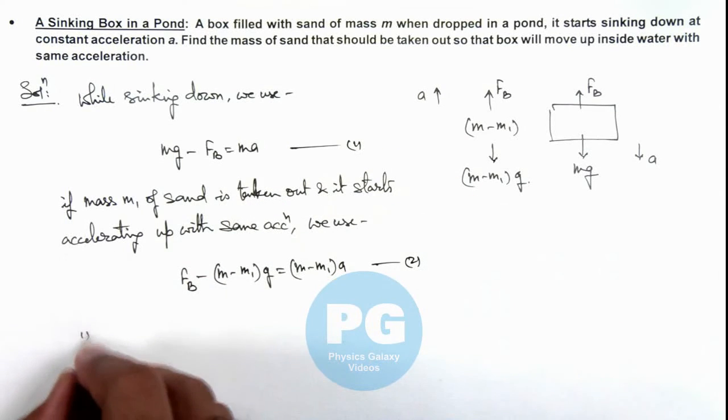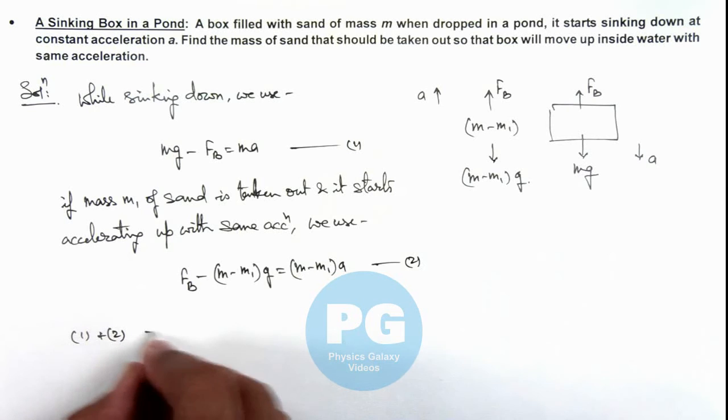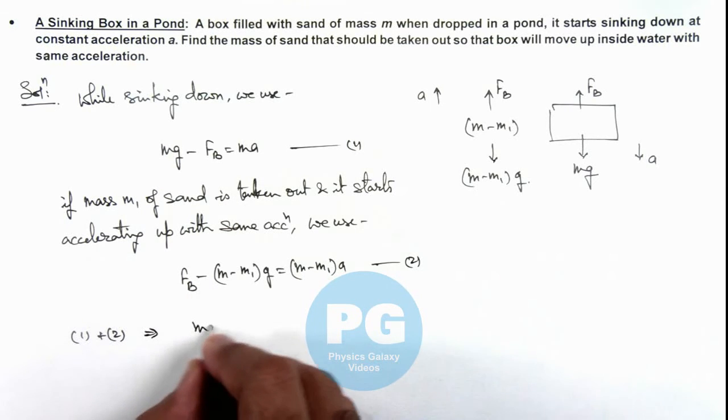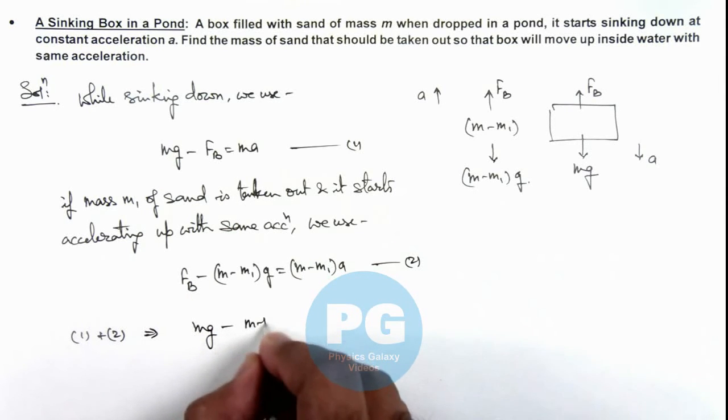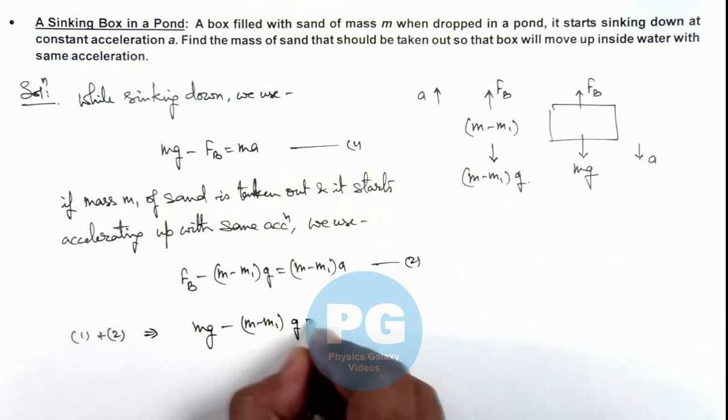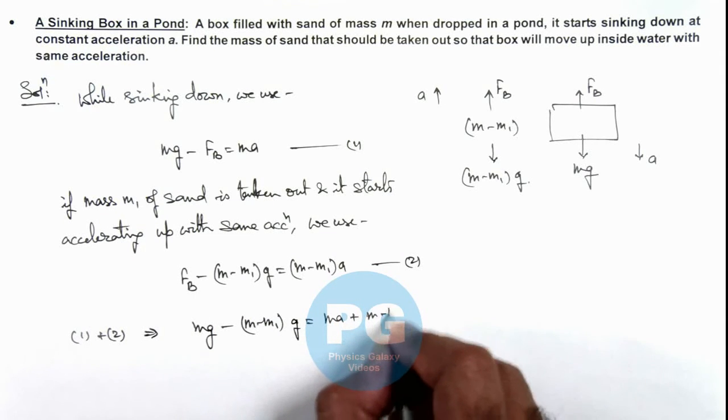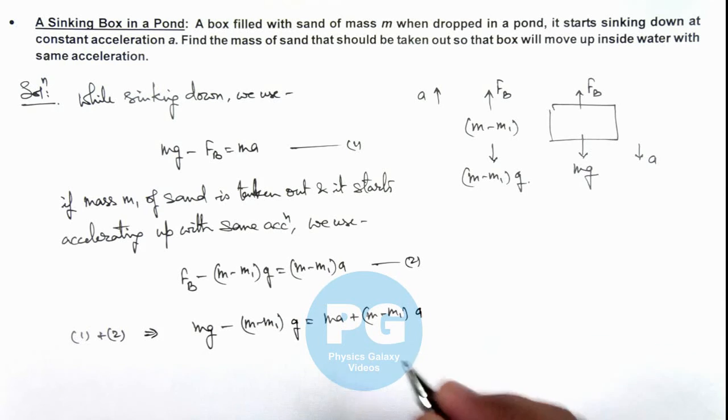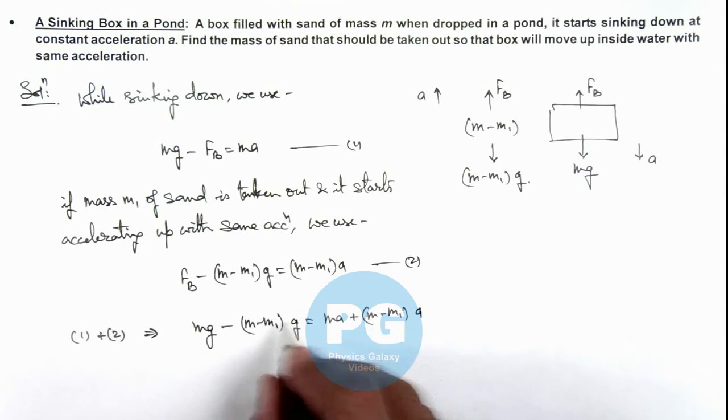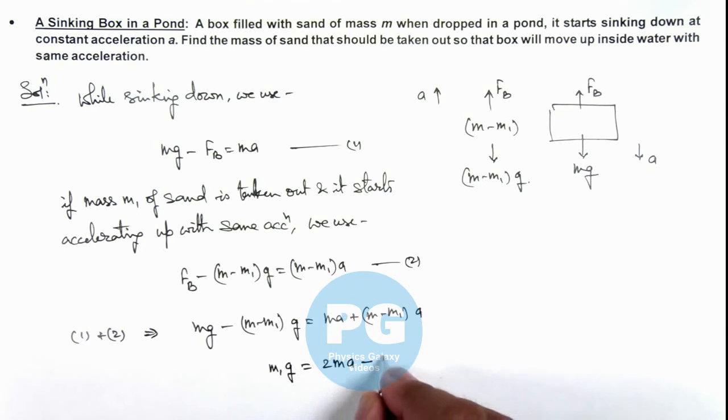Here we can add the two equations and see it will result: mg minus (m minus m1) times g is equal to m ay plus (m minus m1) times ay. So on simplifying this, m1 we can take on one side and here you can see mg and mg gets cancelled out. So this will give us m1 g is equal to 2 m ay minus m1 ay.